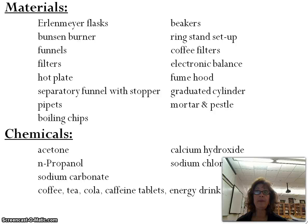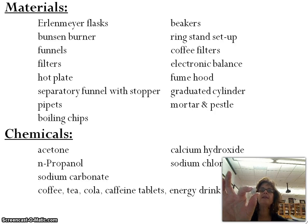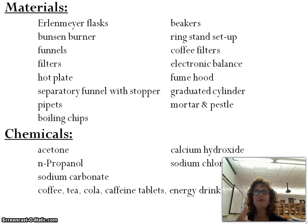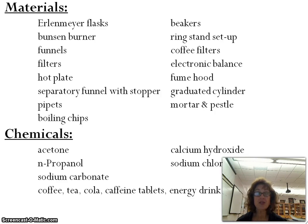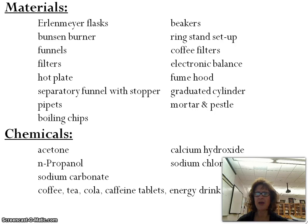We've got a couple of pieces of equipment that are new to you. The first is called a boiling chip. A boiling chip is a very fancy piece of calcium carbonate — it looks like a rock, and it is. It's a piece of calcium carbonate that won't dissolve in water because calcium carbonate is insoluble. You throw these into a beaker or Erlenmeyer flask when you need to boil something. Water can become overheated if vapor molecules don't have a surface to form on, so the boiling chip provides that surface and prevents spontaneous foaming.